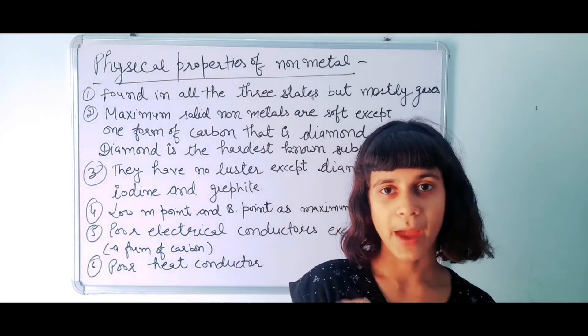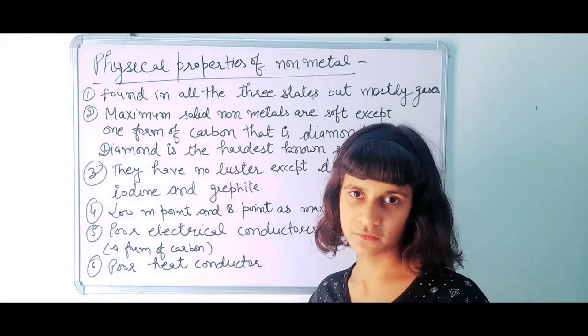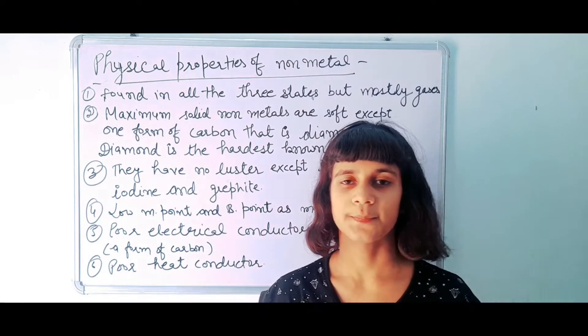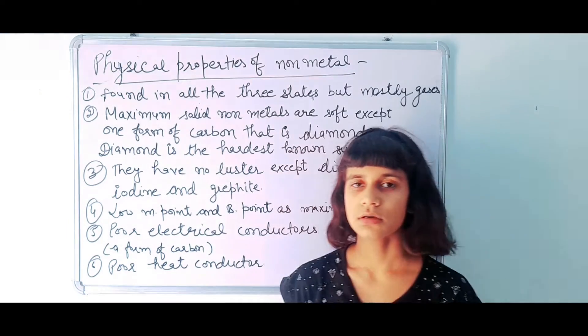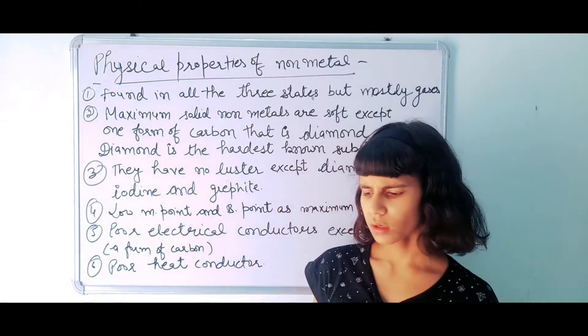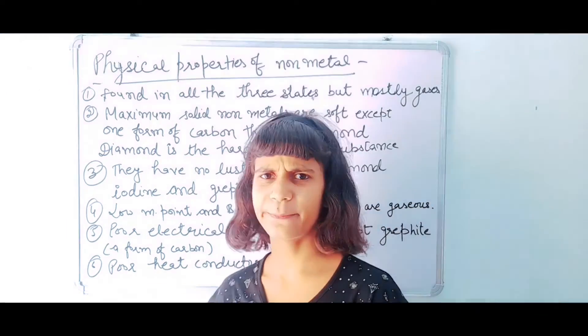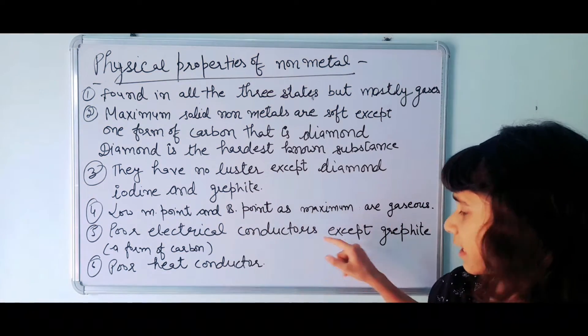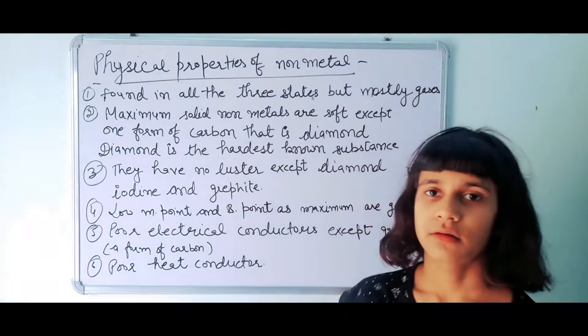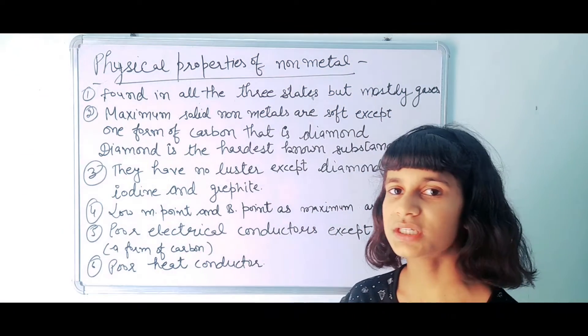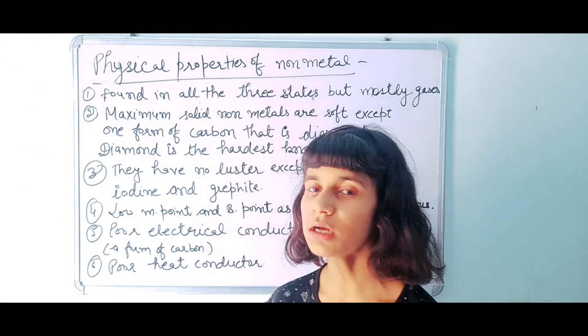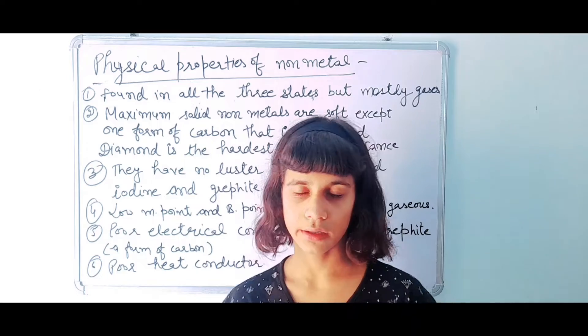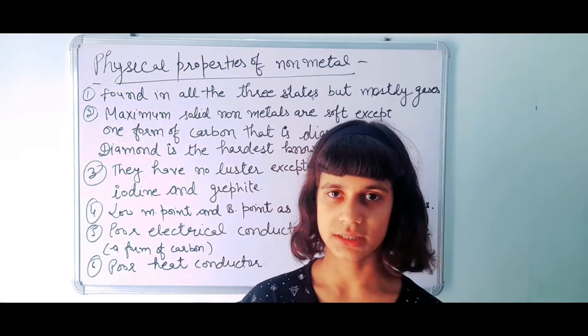Our next point is that non-metals are bad conductors of electricity, except graphite — all other non-metals are bad conductors of electricity.